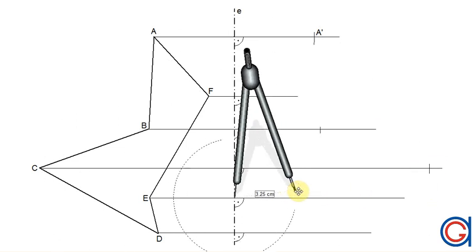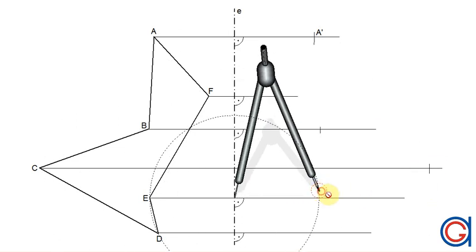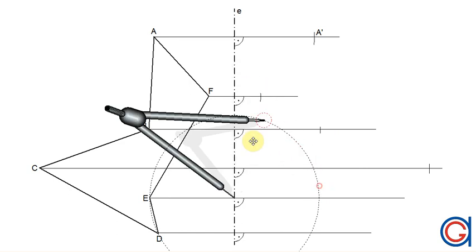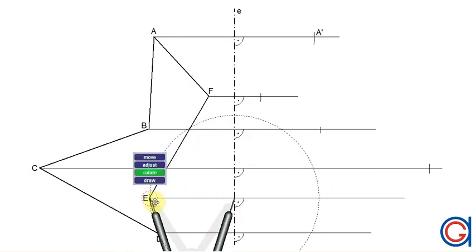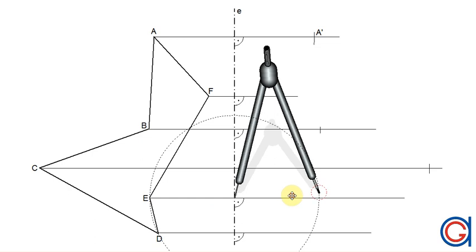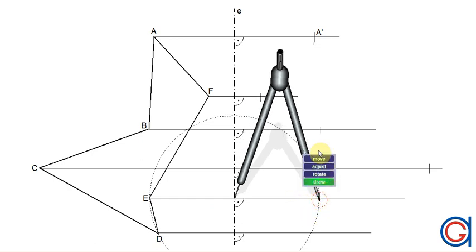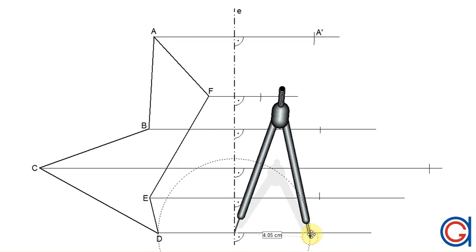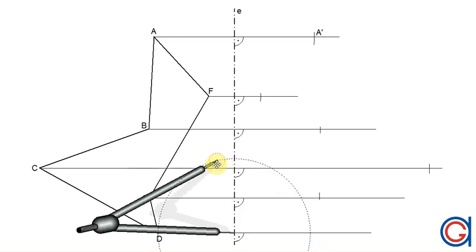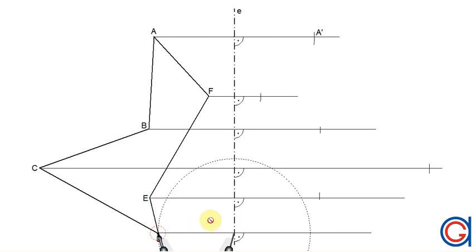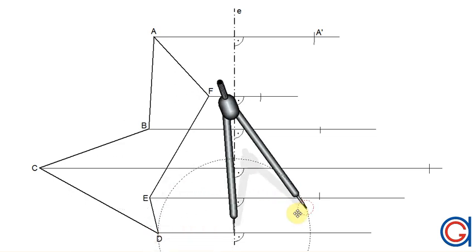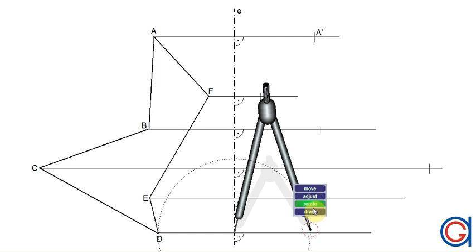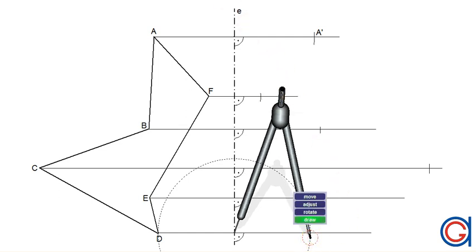And again with vertex E, we are going to transport it across the axis of symmetry onto the horizontal line, obtaining vertex E prime. And finally we transport vertex D, obtaining vertex D prime.